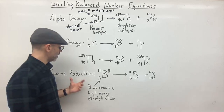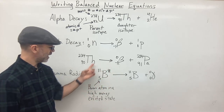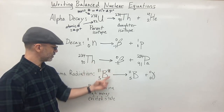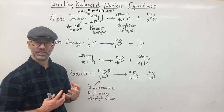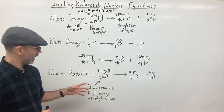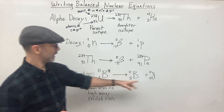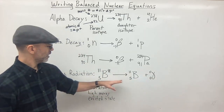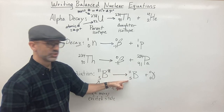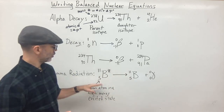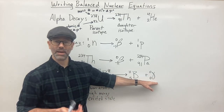Finally, we have gamma radiation. Here we have a boron atom in a high-energy excited state — indicated by an asterisk. In order to become stable and lose some of that energy, it emits a gamma ray. Because gamma radiation has both zero charge and zero mass, none of the numbers change for the daughter isotope. So the parent isotope and daughter isotope are the same element when only gamma radiation is emitted.